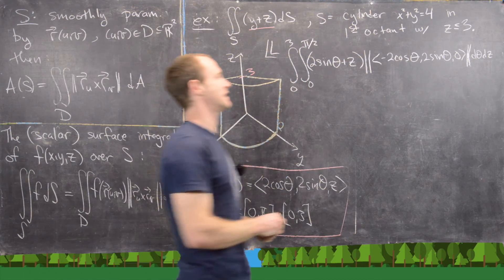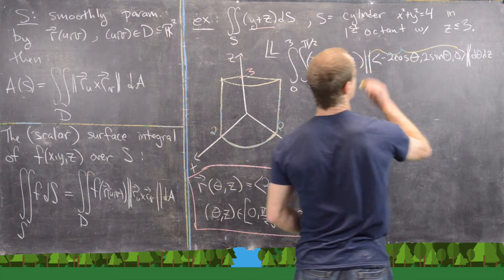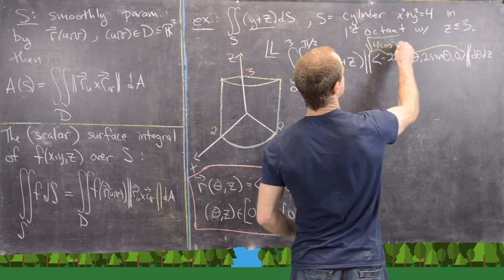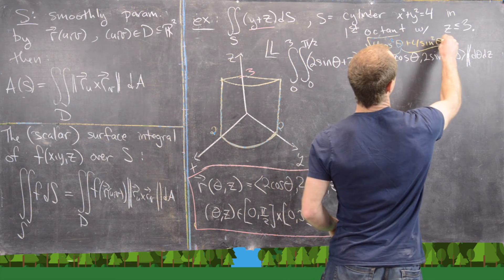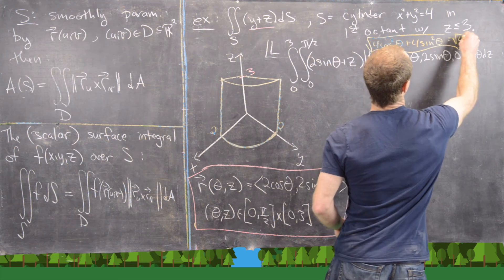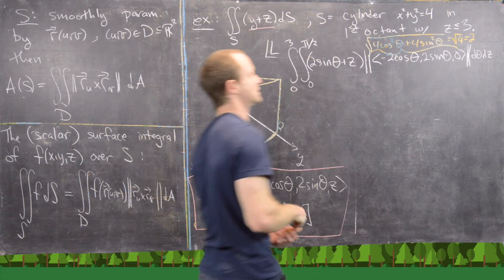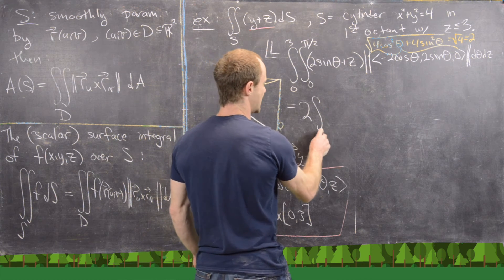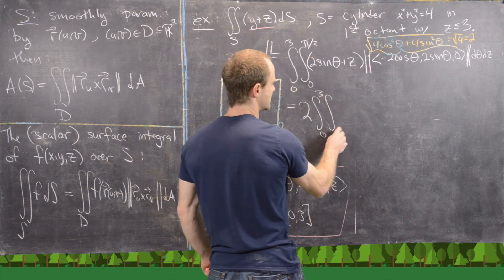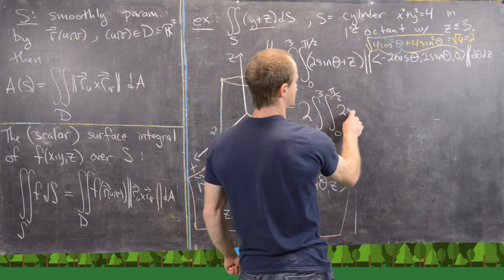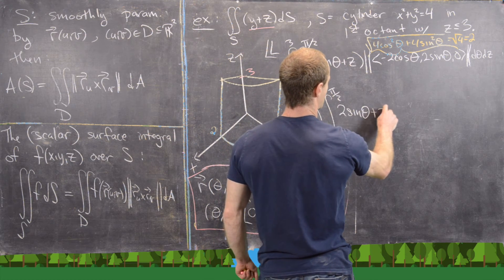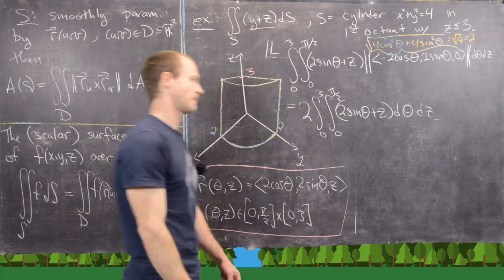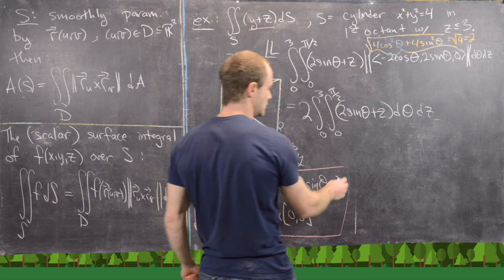The magnitude of the cross product vector ⟨2 cos θ, 2 sin θ, 0⟩ is the square root of 4 cos²θ + 4 sin²θ = √4 = 2. Pulling that out front gives us 2 times the integral from 0 to 3, integral from 0 to π/2, of (2 sin θ + z) dθ dz.